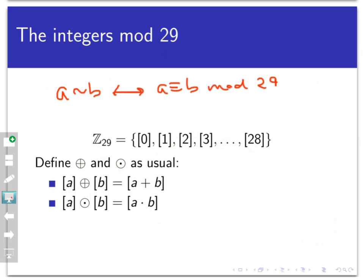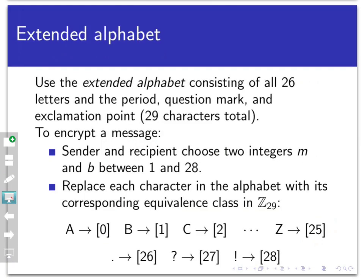So how would I encrypt a message under this so-called affine cipher? First of all, I'm going to add a little bit to the regular English alphabet. We all know the English alphabet consists of 26 letters, and we're going to throw in three more: one for the period, the question mark, and the exclamation point. That'll get us up to a total of 29 characters.